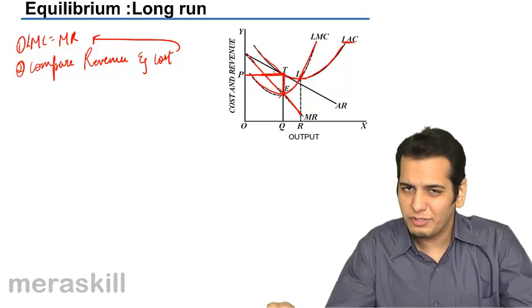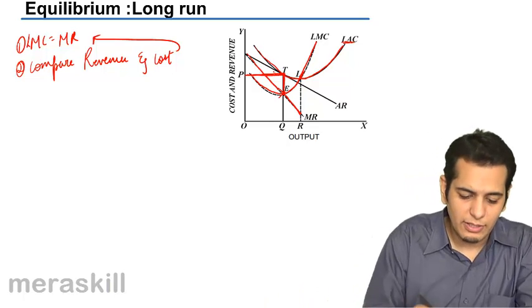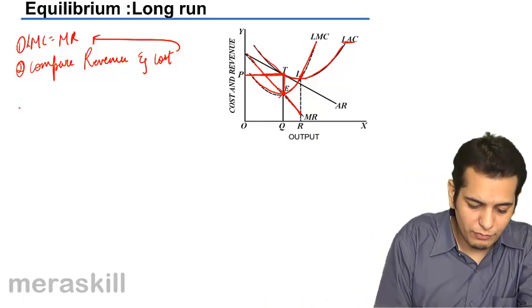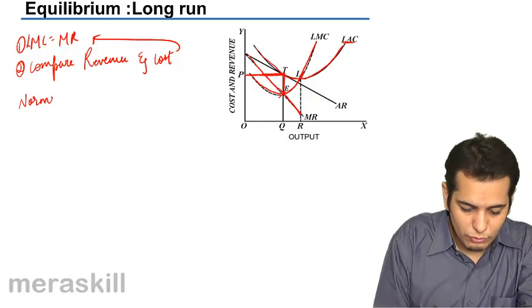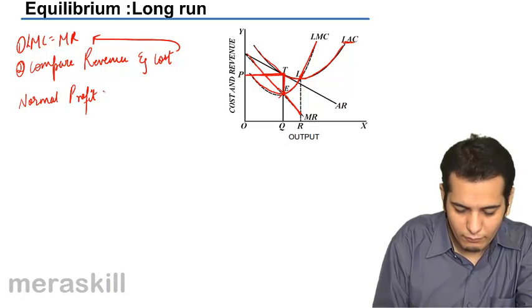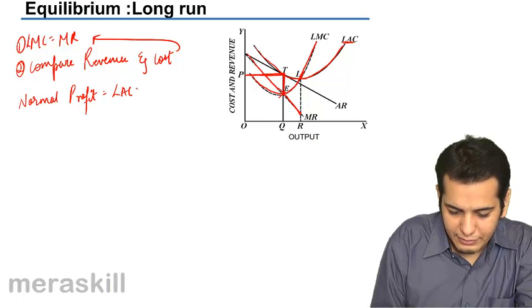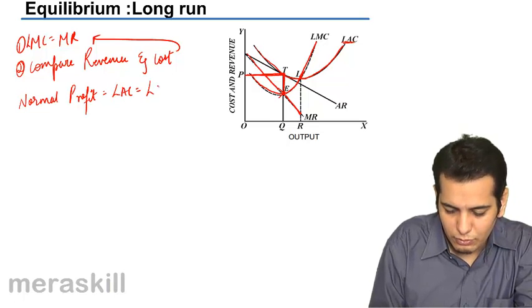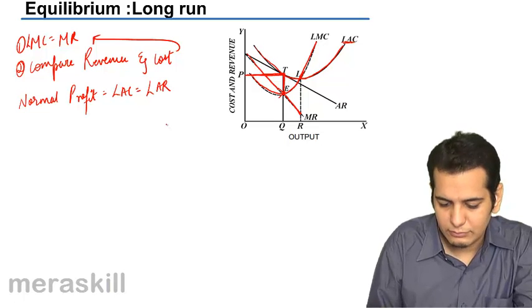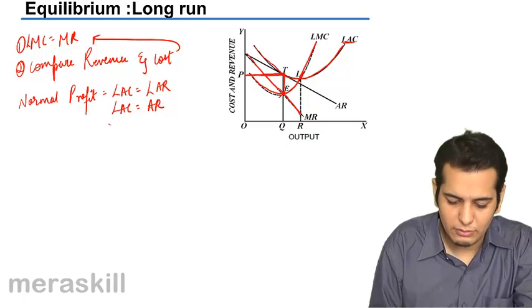Therefore there is no difference between the revenue and cost and thus you will have normal profits. So for normal profit LAC should be equal to LAR or LAC should be equal to AR.